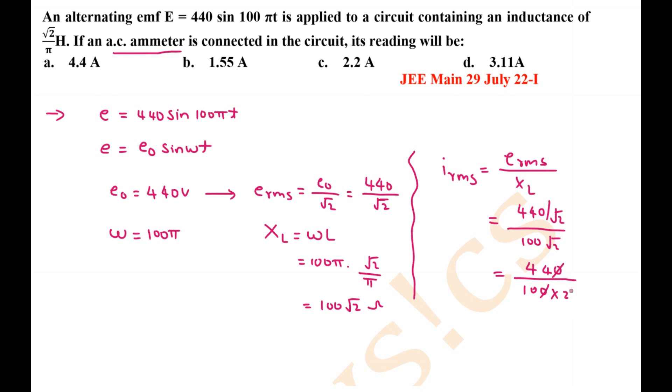These 2 cancel out. These 2 and this 44 make 22. 22 by 10 is 2.2 ampere. So the correct option is option C.